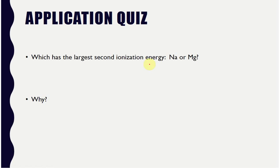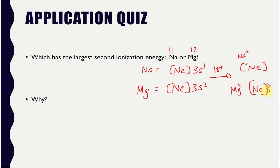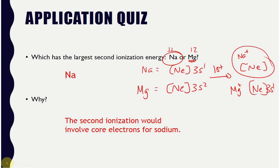So which has the largest second ionization energy? Sodium or magnesium? Now sodium has 11 protons. Magnesium has 12. Sodium is neon 3s1. Magnesium is neon 3s2. So first ionization energy takes us down to neon. This is first Na+. And for Mg+, you get neon 3s1 is left. And so at this point, sodium is down to its core electrons. And so even though the first ionization energy would be the largest with magnesium, the second ionization energy is much higher with sodium.